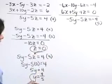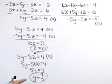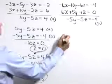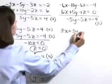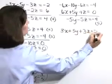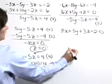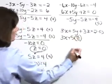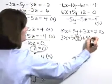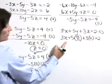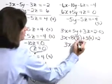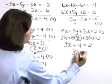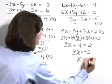We've solved for two of our variables. As a last step, let's go back and solve for x using equation one. Equation one is three x plus five y plus three z equals two. Substituting y equals four fifths and z equals zero: three x plus four equals two — the z term cancels — so three x equals negative two, or x equals negative two thirds.